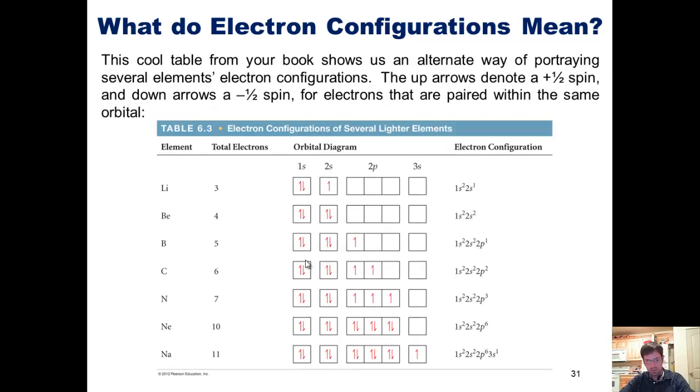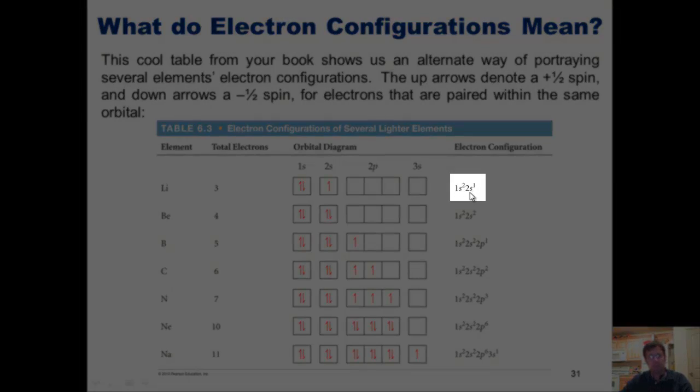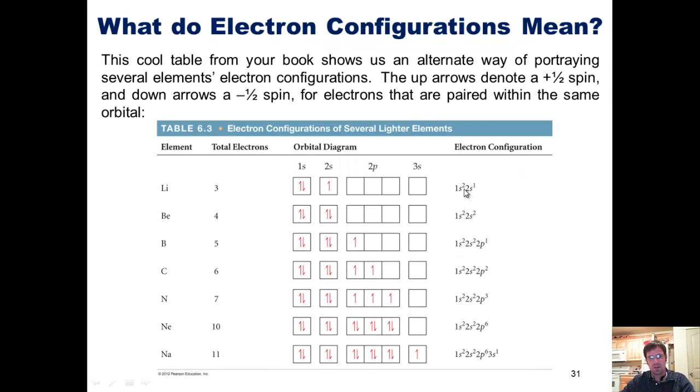Now, this cool table from your book shows us an alternate way of portraying several elements' electron configurations. You'll notice that the up arrow denotes a plus one-half spin, and the down arrow denotes a negative one-half spin for electrons that are paired within the same orbital. So if we look here at lithium, for example, its electron configuration is 1s2, 2s1. This means that in its 1s spherical orbital, it has two paired electrons, one having a positive one-half spin, and the other having a negative one-half spin. Its one electron occupying the 2s orbital fills in here completely unpaired. We can follow an analogous pattern as we move forward, showing these similar diagrams for these other elements on the periodic table.